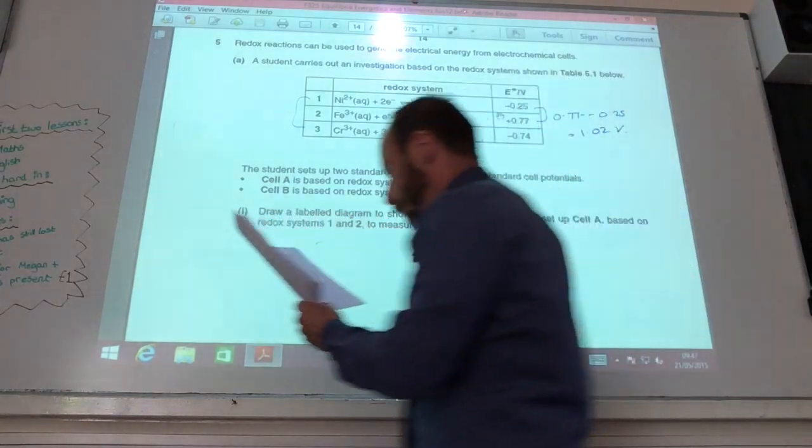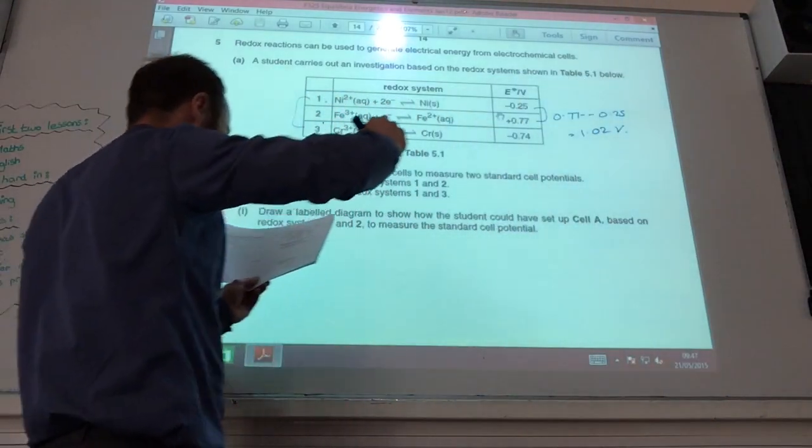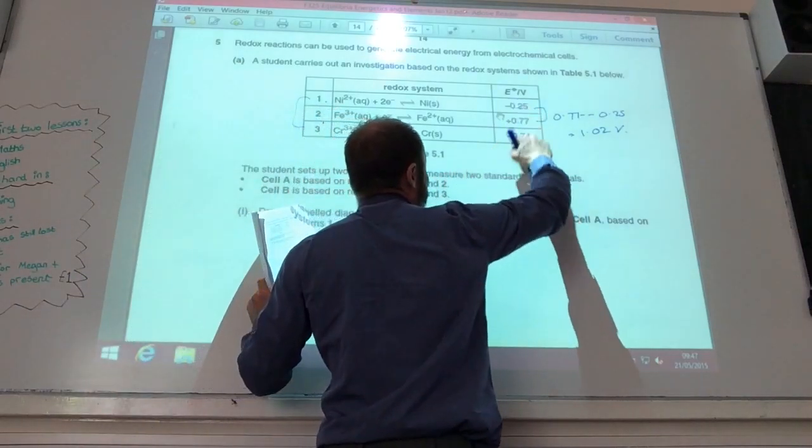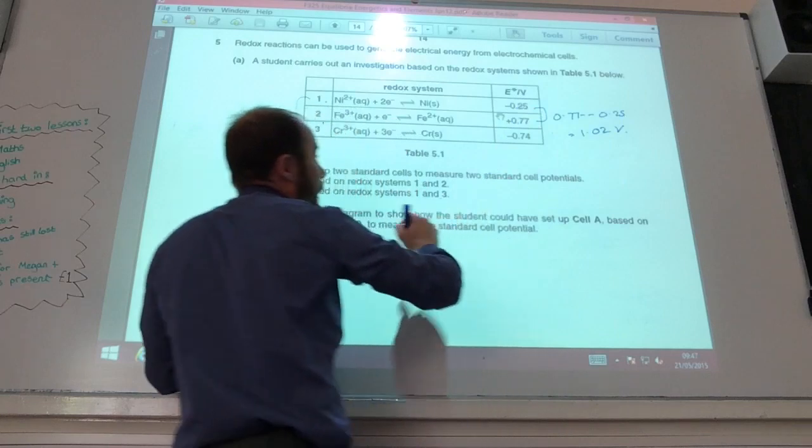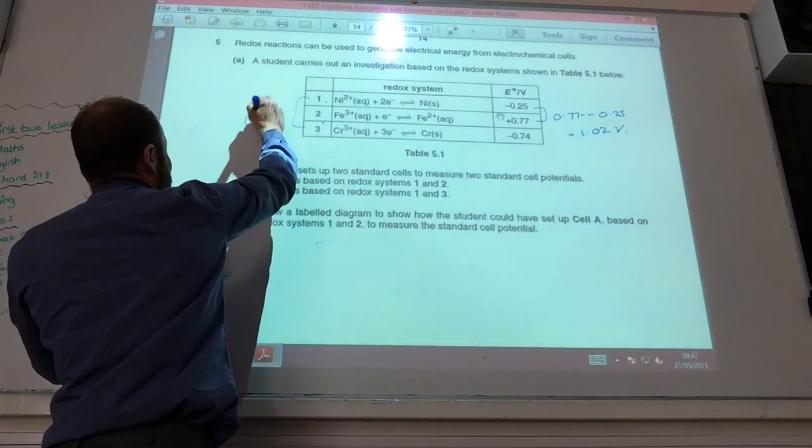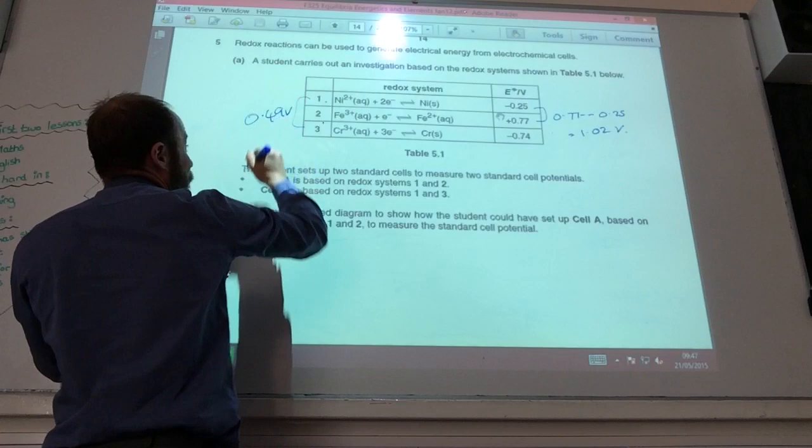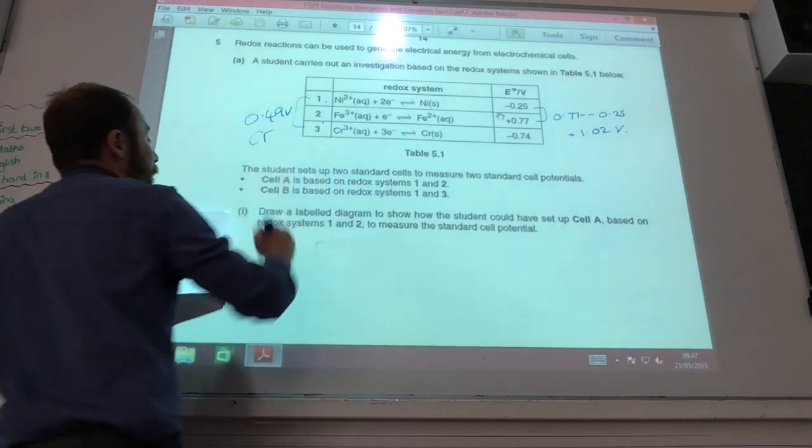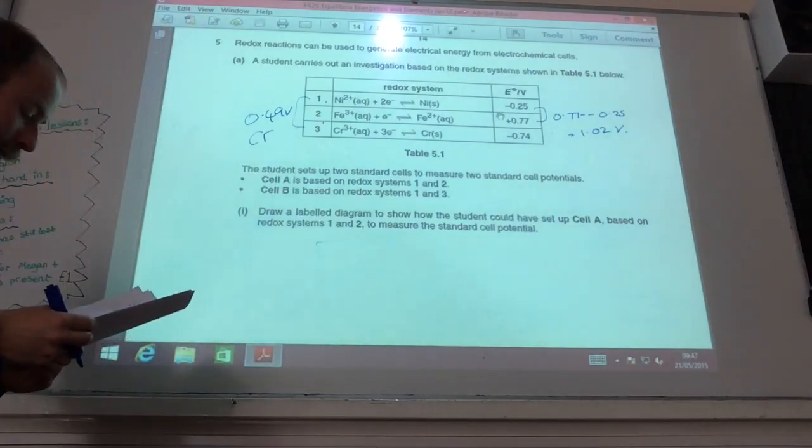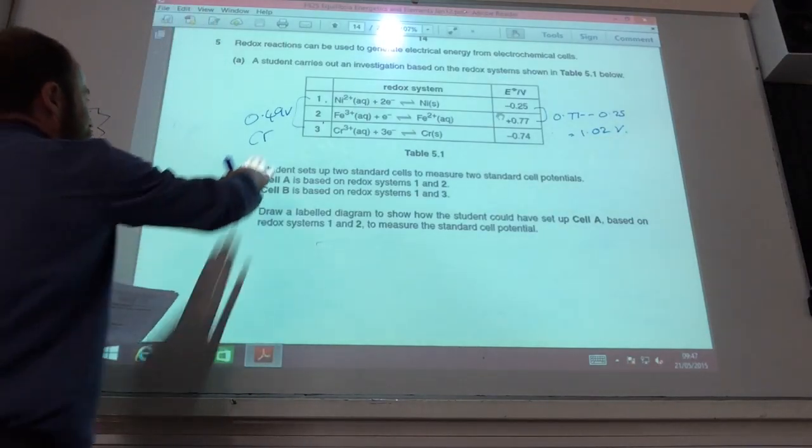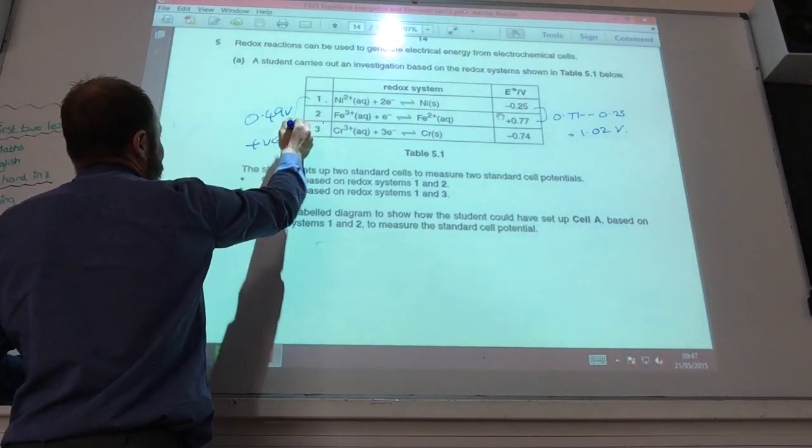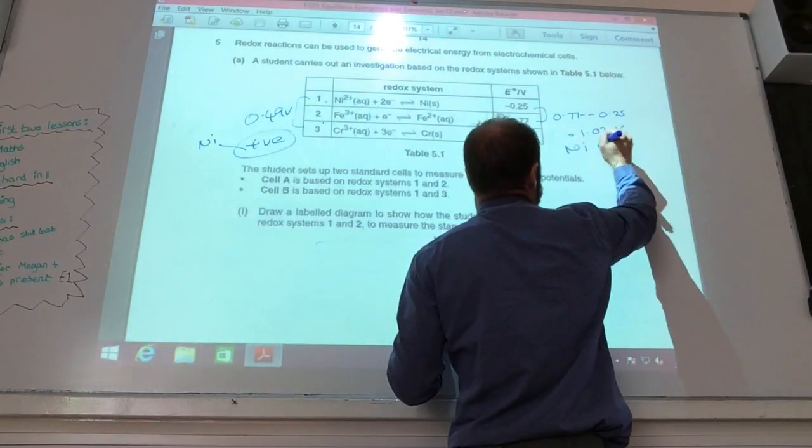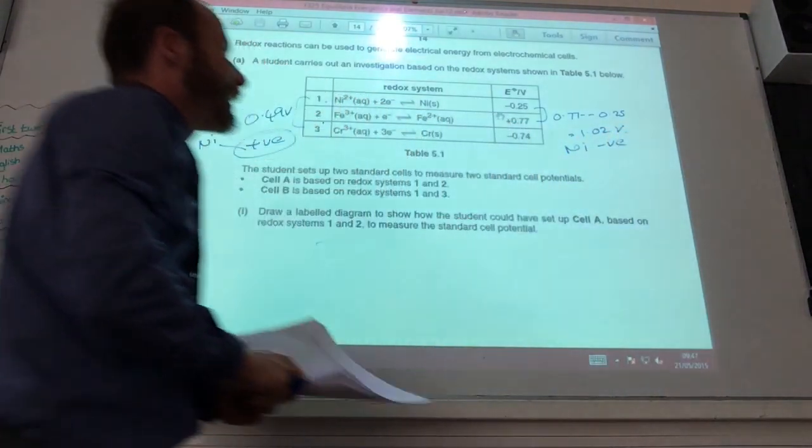The other one, cell B, is based on 1 and 3. What's going to be the difference? It's going to be the difference between minus 0.74 and minus 0.25. So the difference between those two is 0.49 volts. Which one is going to be the negative? In this case it's actually going to be the chromium is going to be the negative electrode. And so the nickel electrode will actually be positive in that one. So the nickel electrode is positive in that one and the nickel electrode is negative in that example.